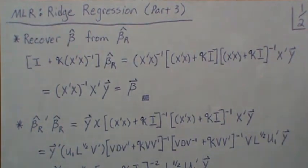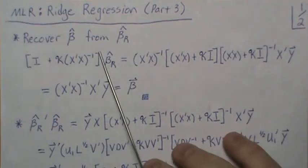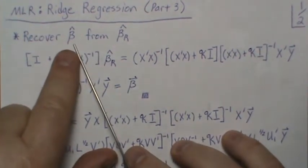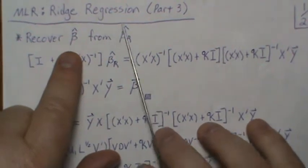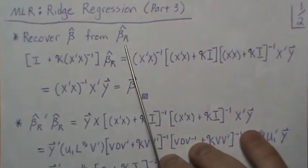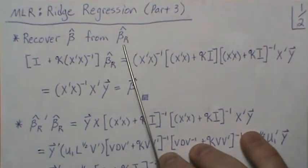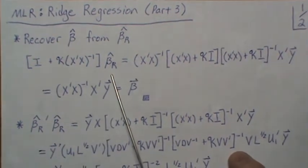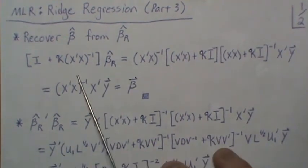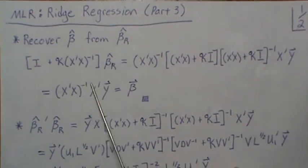One note here is can we recover the original beta parameter once we have the beta parameter for the ridge estimators? And the answer is yes. If we take the ridge estimators and pre-multiply it by this matrix, we get our beta back.